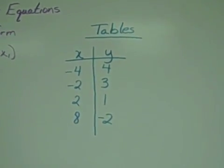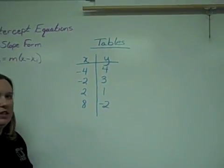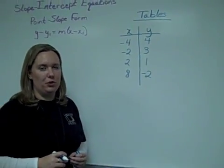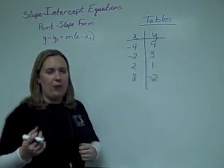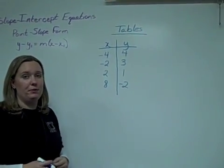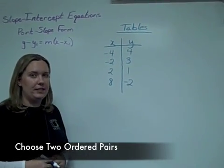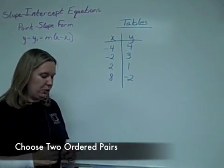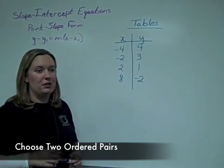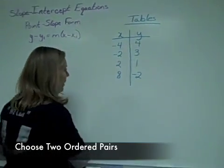In tonight's episode, we're going to talk about writing linear equations from tables. We do this in the same manner that we write linear equations from two ordered pairs, except rather than having two ordered pairs, we've been given in this table four different ordered pairs to use. This means we have a choice in which ordered pairs we want to use. I would recommend using the ordered pairs with the smaller numbers that are easier to use and you make fewer errors that way.